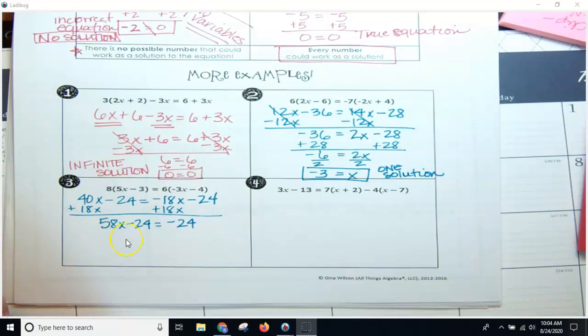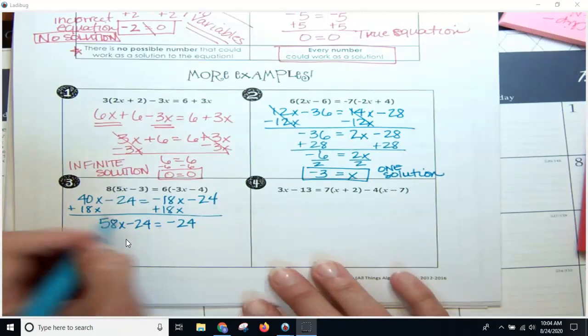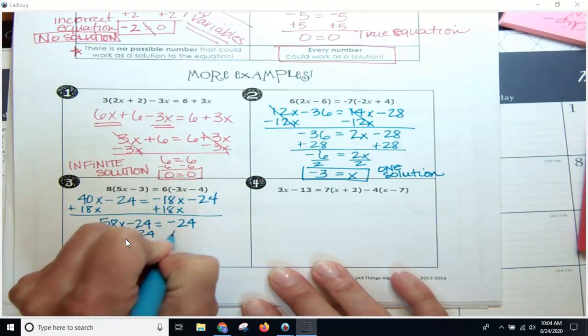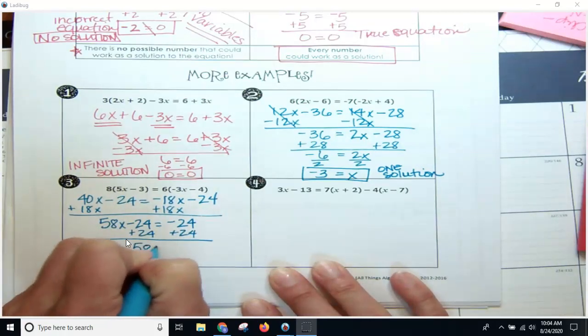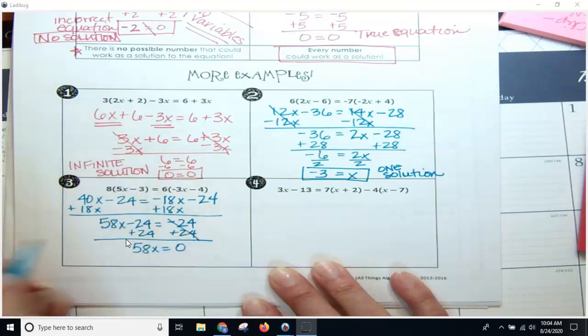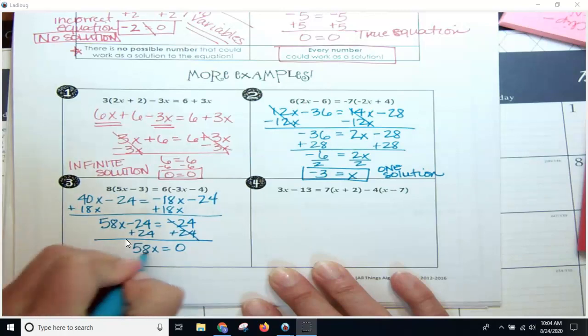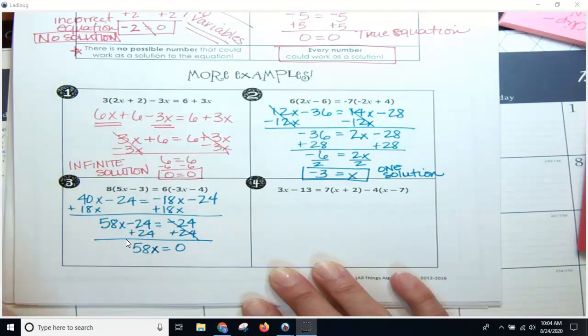All right, so now here hopefully you've gotten at least this far. I'm going to add 24 to both sides, and I'm going to get 58x equals 0. This cancels out to be 0. However, notice you still have a variable here. My variable has not gone away. I still have a variable, so I can still divide by 58.